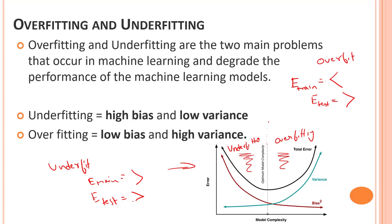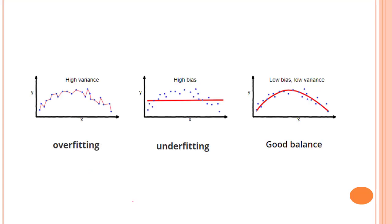Underfitting occurs when our machine learning model is not able to capture the underlying trend of the data. To avoid the overfitting in the model, the fed of training data can be stopped at early stage due to which the model may not learn much. So now let's look into a diagrammatic approach of what overfitting, underfitting, and good balance look like.